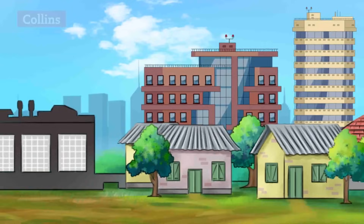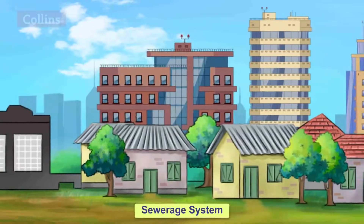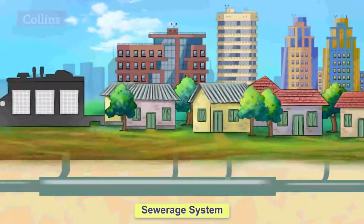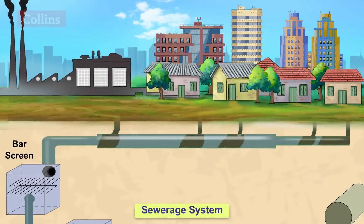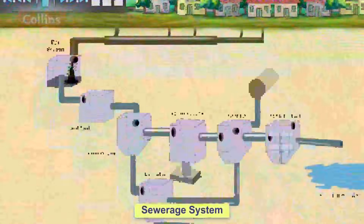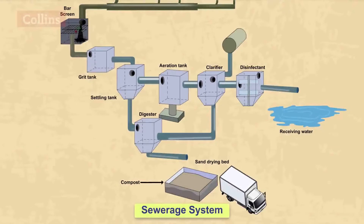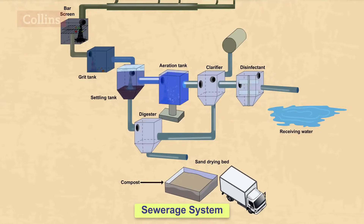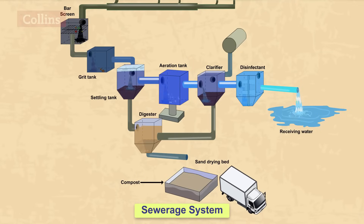Cities and towns have sewerage systems in place to carry the wastewater from our homes, hotels, factories and other establishments to a sewerage treatment plant where the wastewater is treated. It is then deemed safe to release into other water sources. The treatment of wastewater goes through different stages. Wastewater is treated to remove the physical, chemical and biological contaminants present in it through various processes.